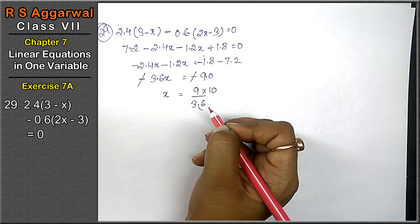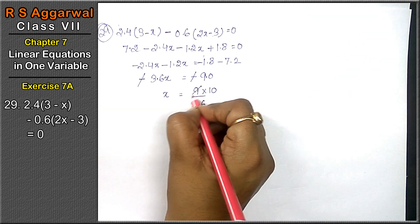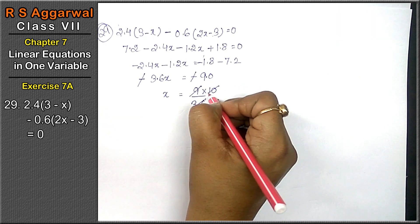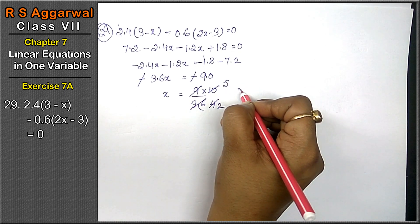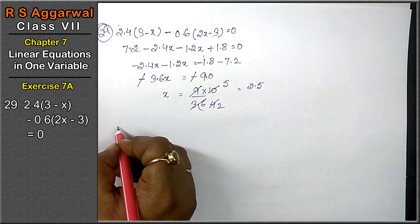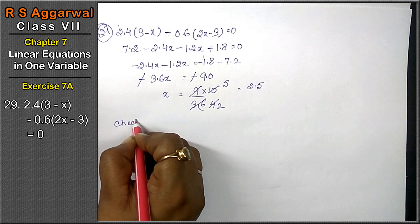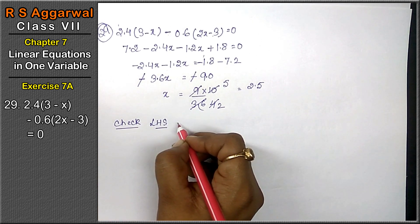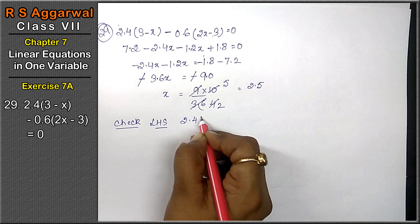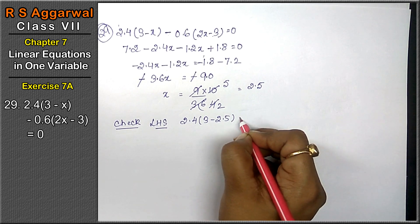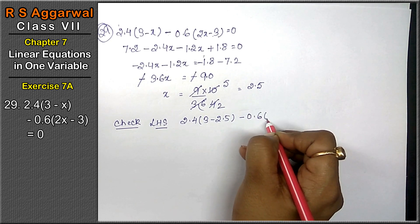Minus minus will get cancelled. X equals to 9 upon 3.6, point here, 1.0 on top. Now 9 ones are 9, 9 fours are 36, 4, 2, and 5. That means 2.5 is the answer.